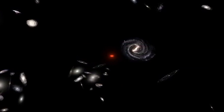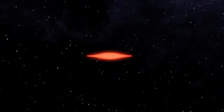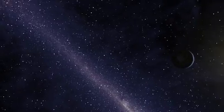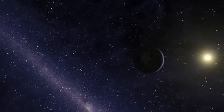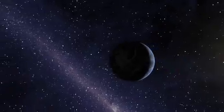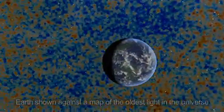The photons traveled for 13.8 billion years before they reached the Planck detectors and died a glorious death, giving up the information that they had gleaned passing through the entire universe to our instruments, enabling us to make this beautiful map of the universe.